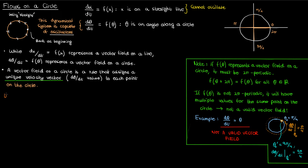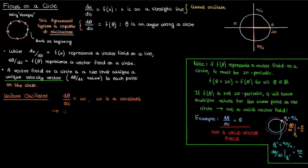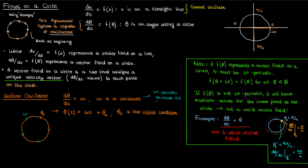Let's go to an actual valid example: the uniform oscillator. Suppose we have dθ/dt = ω, where ω is some constant. This is a very simple differential equation — integrating both sides gives θ(t) = ωt + θ₀, where θ₀ is the initial condition. Schematically, the solution starts at θ₀ and goes around and around the circle at a constant angular velocity ω. Since ω is just a constant, it is automatically 2π-periodic, so this is indeed a valid vector field.